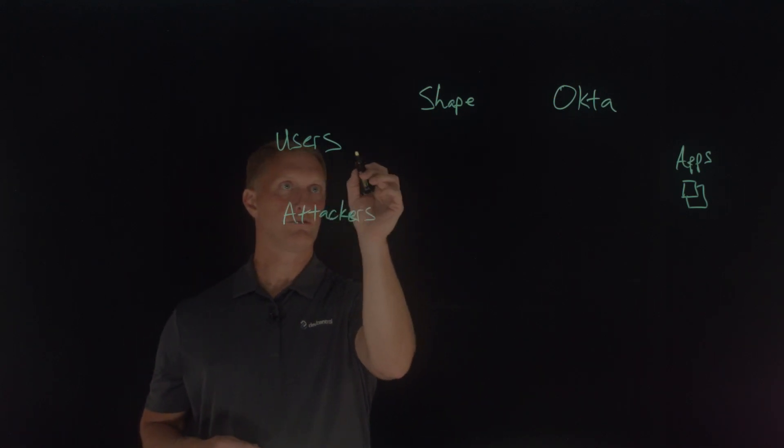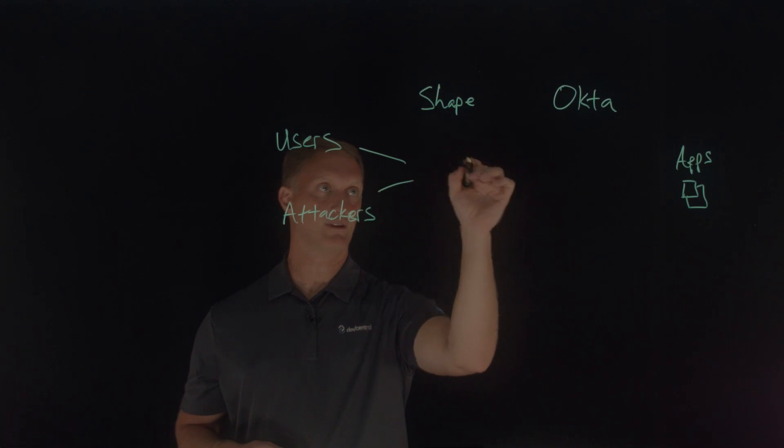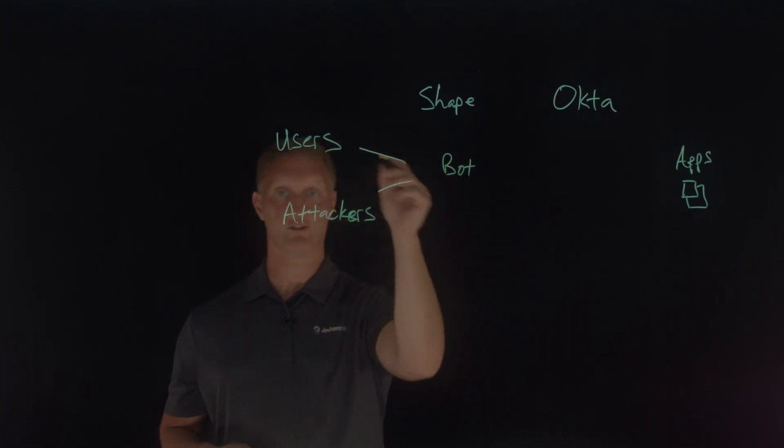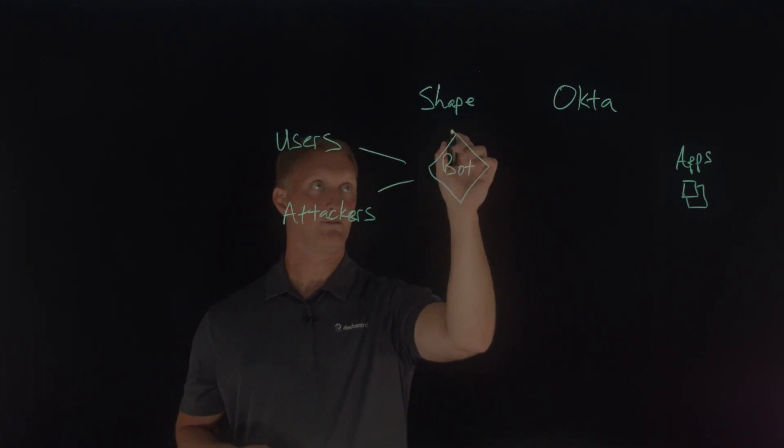So as legitimate users come in or attackers come in, I'll just draw a flow chart of sorts here. Shape is going to check and see, is this request or is this user a bot or not? So I'll just put the diamond around here.